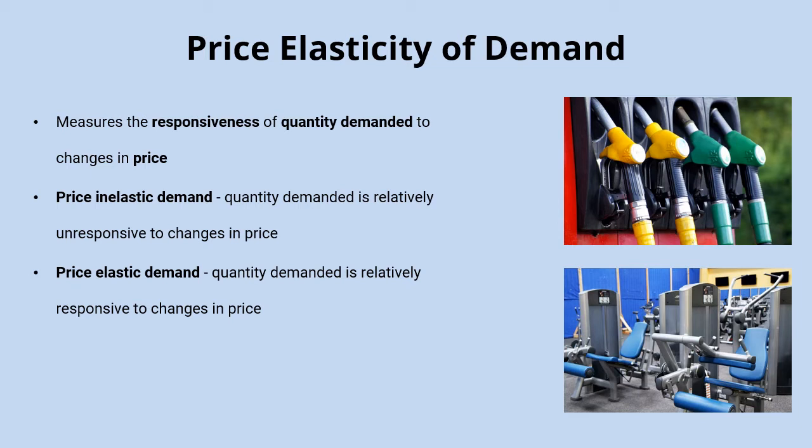You might also have products with price elastic demand — goods for which quantity demanded is relatively responsive to changes in price. For example, gym memberships: the price might go up by only one or two percent and the quantity demanded might fall much more significantly. Then there are products with unitary price elasticity of demand, where changes in quantity demanded are directly proportional to changes in price — if the price went up by 10% the quantity demanded would go down by 10%. Note that when price goes up, quantity demanded goes down, and vice versa.